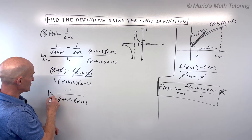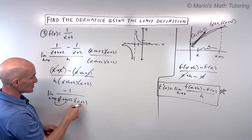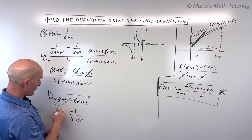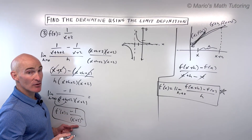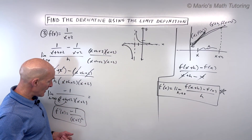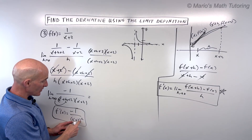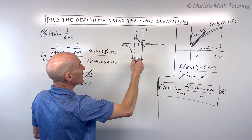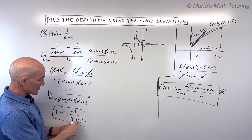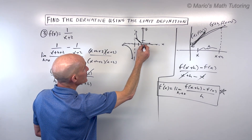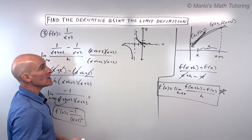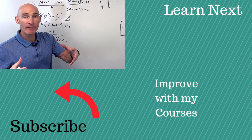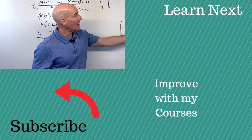It's the limit as h approaches 0, so let's put 0 in for h. That gives us x plus 2 times x plus 2, which is negative 1 over x plus 2, quantity squared. That's our f prime of x — our derivative. The derivative is a formula for the slope anywhere along the graph. For example, if I put in negative 1: negative 1 plus 2 is 1, 1 squared is 1, so negative 1 over 1 is negative 1 — so at x equals negative 1, the slope is negative 1. If I put in 0: 0 plus 2 is 2, 2 squared is 4, giving negative 1 fourth — so at x equals 0, the tangent line has a slope of negative 1 fourth. The slope of the tangent line changes depending on where you are on this curve because it's not a straight line. This is how you approach finding the derivative using the limit definition, and remember it comes from the slope.